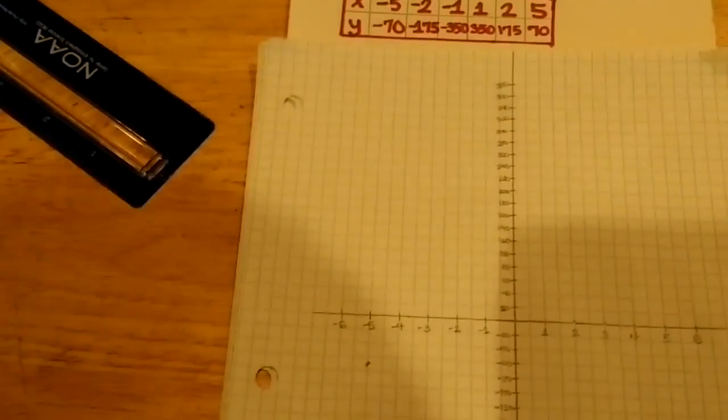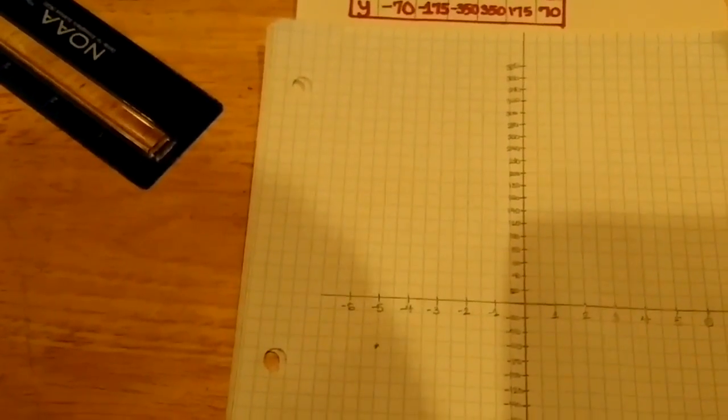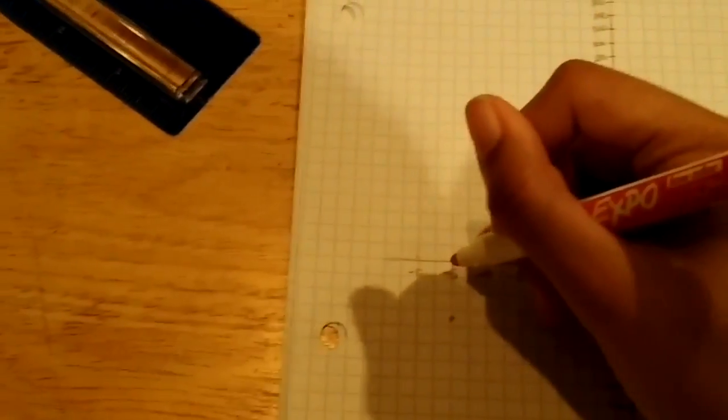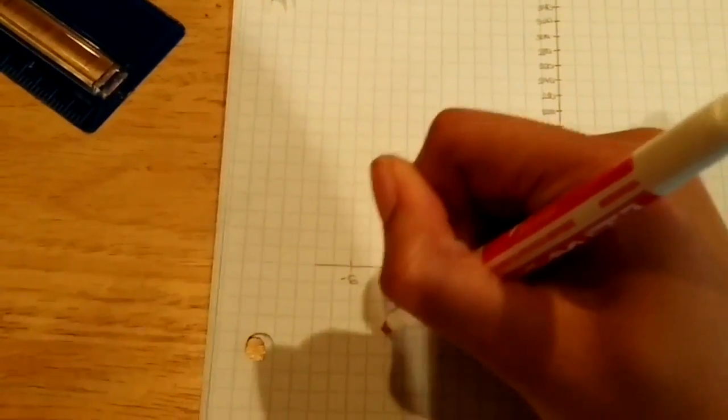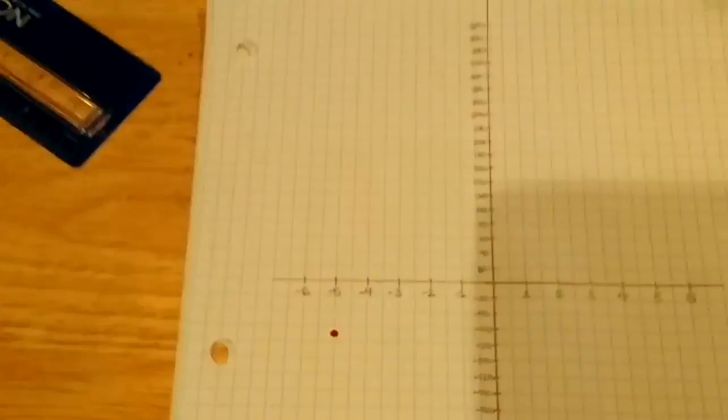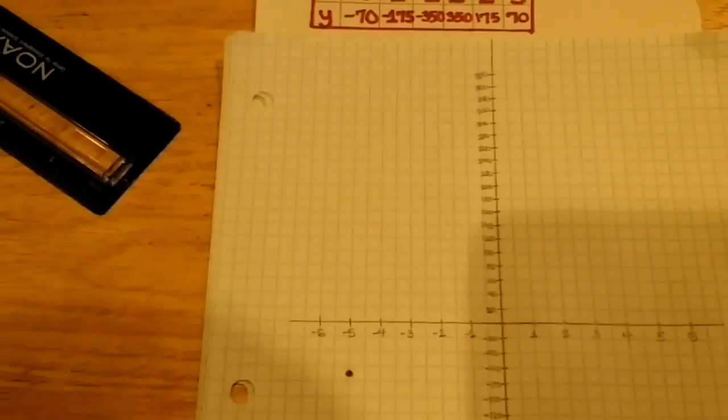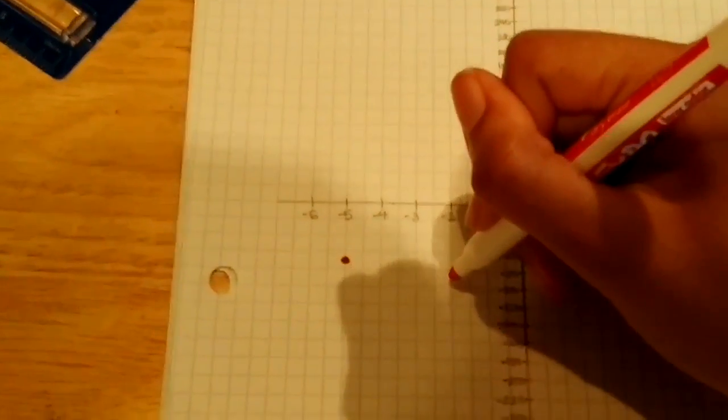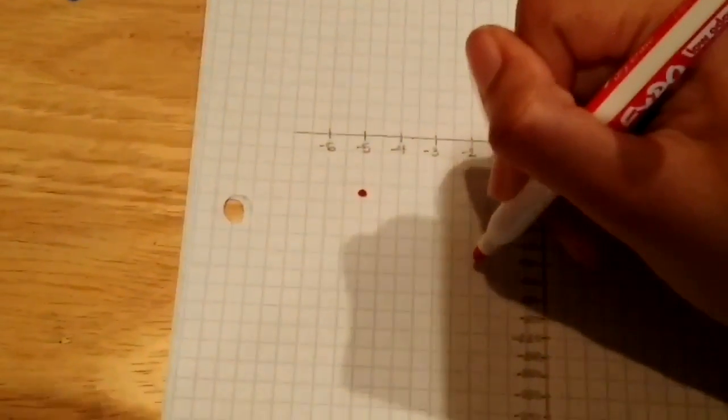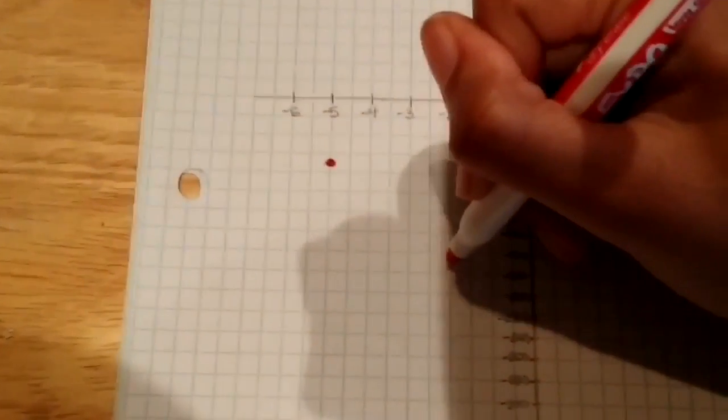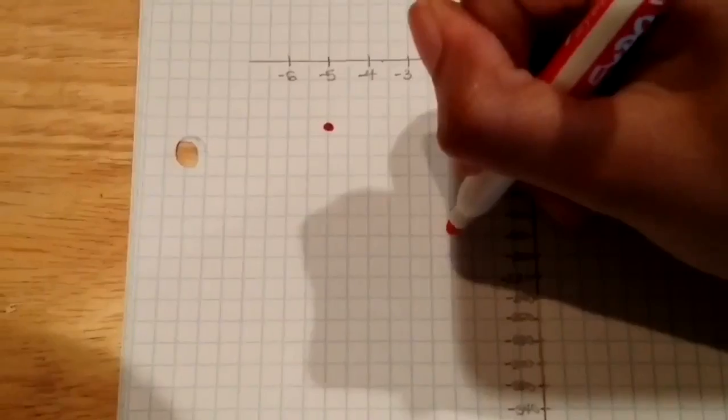We're ready to plot the points on the graph. Our first point is at negative 5, negative 70. So you go back negative 5 and down to negative 70. The next point is at negative 2, negative 175. So you go back 2, down to 175. Right here.